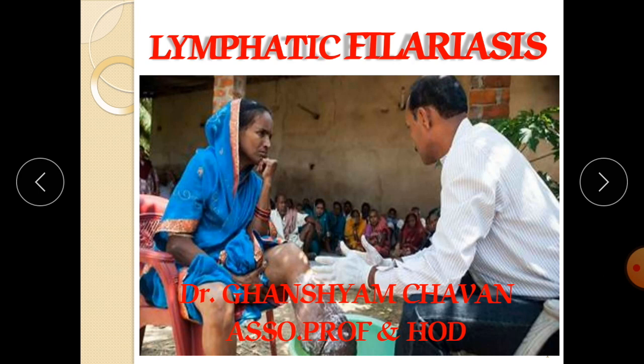So friends, what is lymphatic filariasis? This disease occurs due to mosquitoes, and the infection occurs due to parasites. Those parasites mostly affect your lymphatic system, that's why it is called lymphatic filariasis. The name of the parasite is filaria, and the vector is the mosquito, through which it can spread from one person to another.